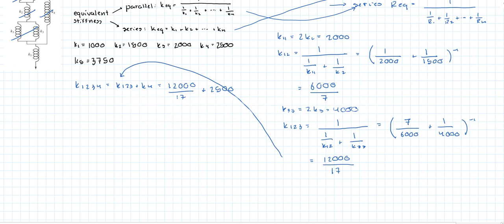Mind you, these are Newtons per meter or whatever — it's just to have some numbers to crunch. That'll give you 54500/17, and then all of that is going to be in series with K5.